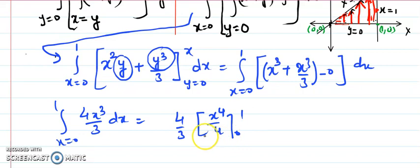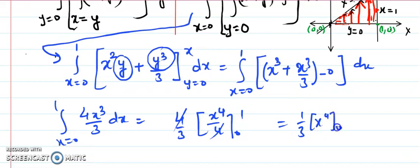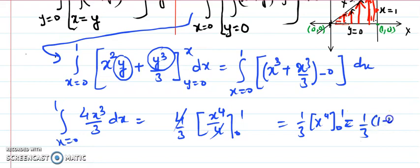This leaves 1 over 3 times the integral of x to the fourth from 0 to 1, which equals 1 over 3 times (1 minus 0). So the final answer is 1 over 3. I hope you have understood — let us see some more examples in the next lectures.